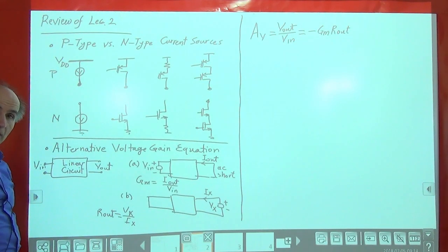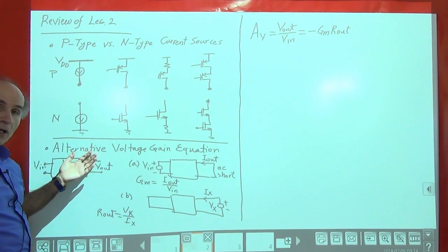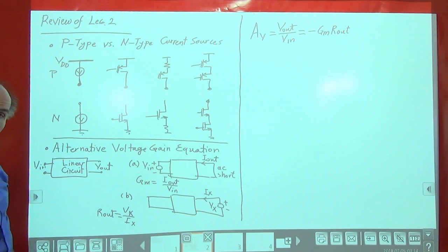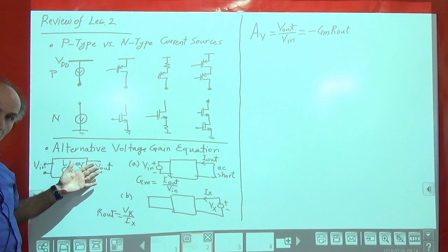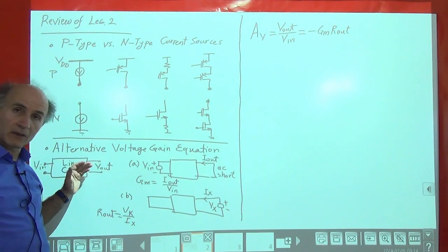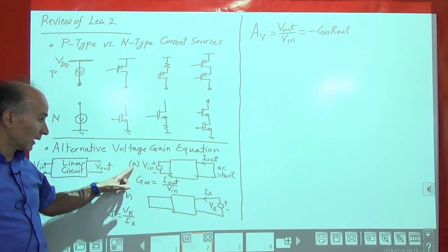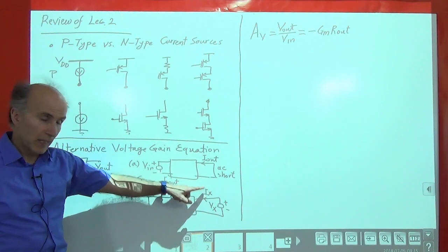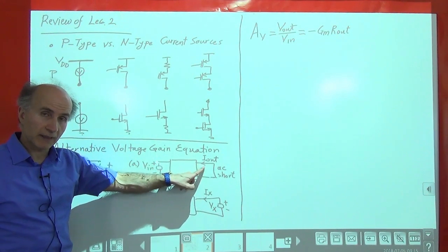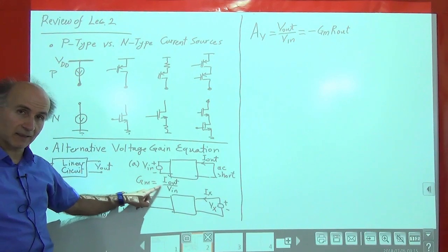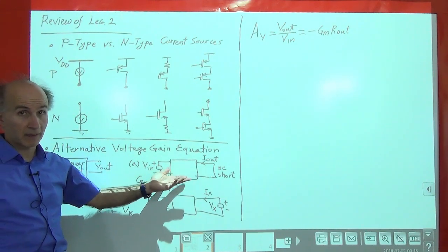The second topic from last time was a different way of calculating the voltage gain of circuits. We have a simple linear circuit with an input voltage and an output voltage, and we want to find the voltage gain Vout over Vin from a small signal perspective. We carry out this calculation in two steps.